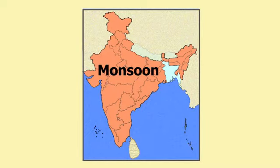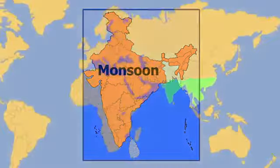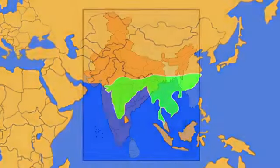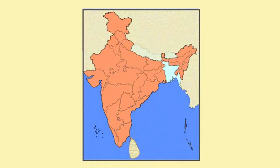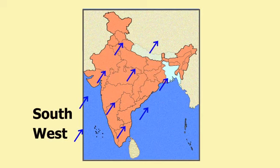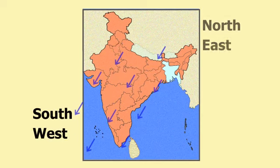This type of climate is found mainly in south and southeast Asia. The word monsoon comes from the word 'mausam' and it refers to the winds which change their direction. In India, the winds blow from southwest to northeast and northeast to southwest.